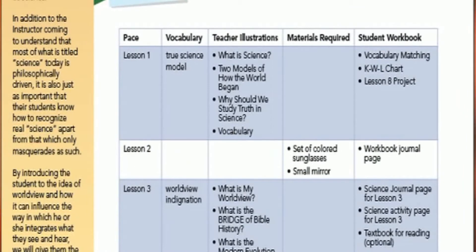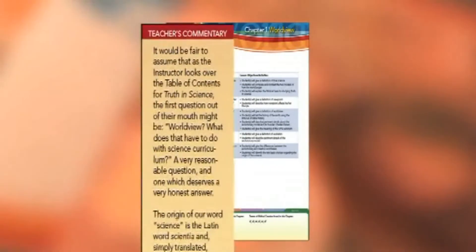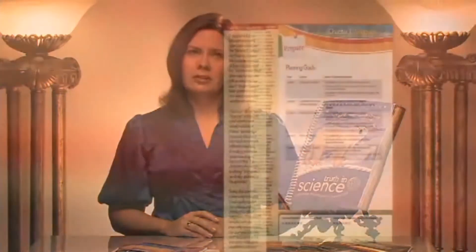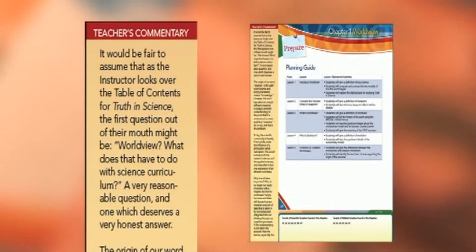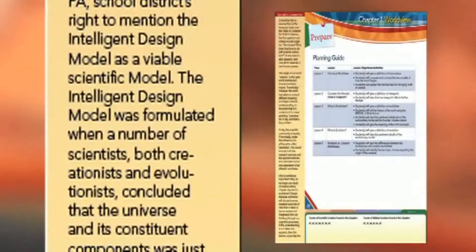The planning guide continues with a list of vocabulary words as they are introduced into each section, the illustrations needed to support the lesson, and the material required by the teacher and students for the lesson. In the Teacher's Commentary section, you will find remarks relevant to the worldview aspects of the particular lesson being taught. If there are any evolutionary issues directly tied to a lesson subject, you should find commentary addressing this. Sometimes the commentary will take a more general approach to the worldview impact — for instance, in the planning guide pages, the commentary addresses the general implications that worldview has for the chapter's subject matter, such as information regarding the subject of intelligent design.